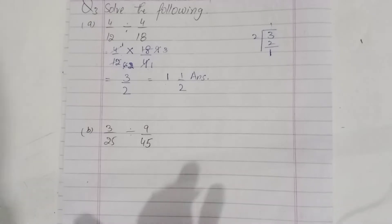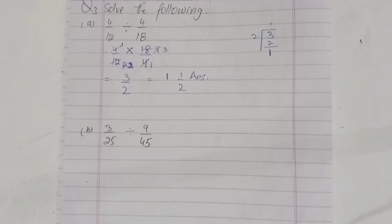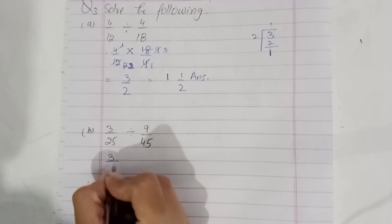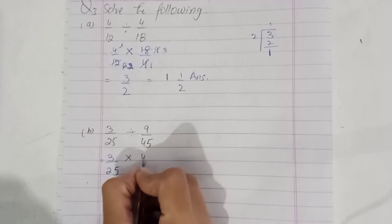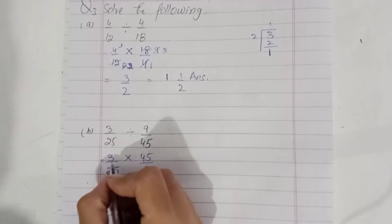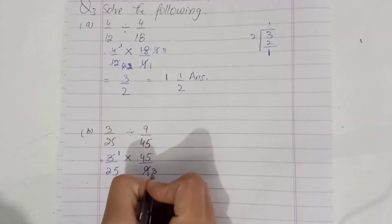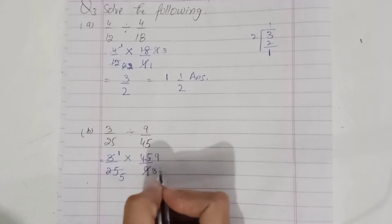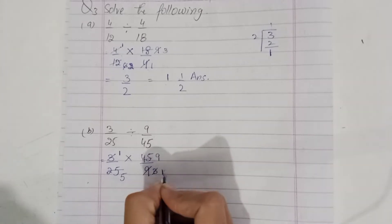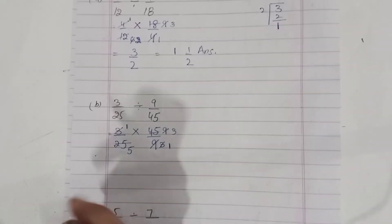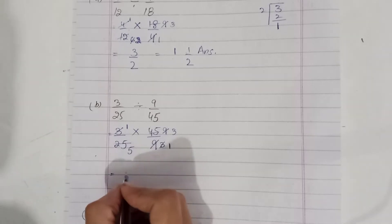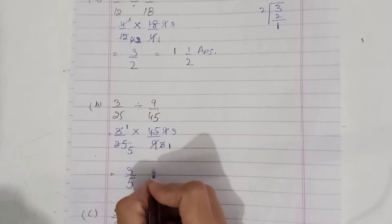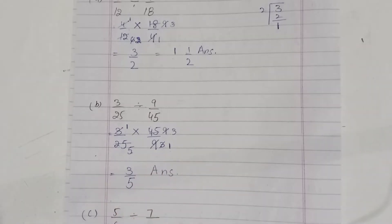Now students, Part Number 2. Here we will change the division sign. We will change the division sign to multiplication and flip the fraction on the right side. We will cancel: 5 and 5 cancel to give 1, and this is 9 and 3 giving 3 over 9. If we multiply, 3 times 3 is 9, and 5 times 1 is 5. This is the proper fraction, so this is our answer. Now Part Number C.